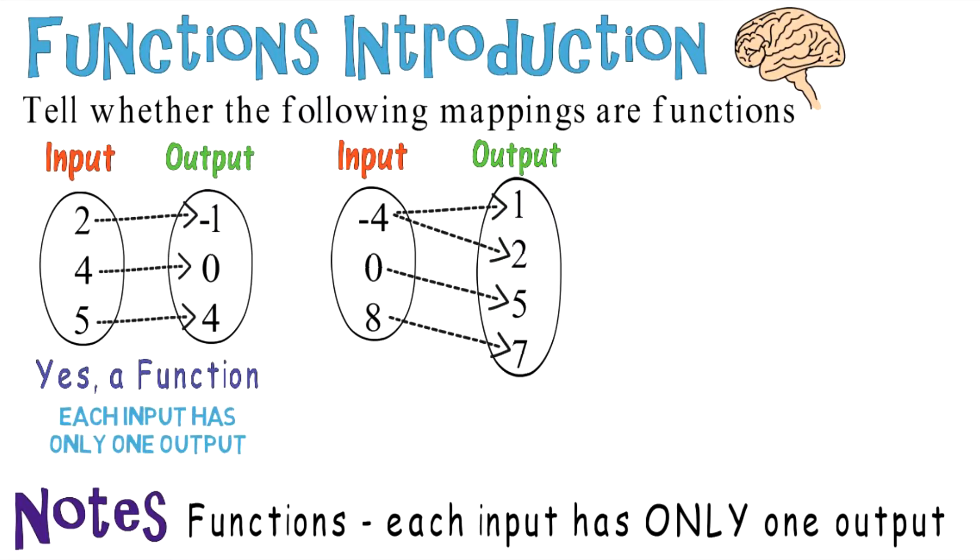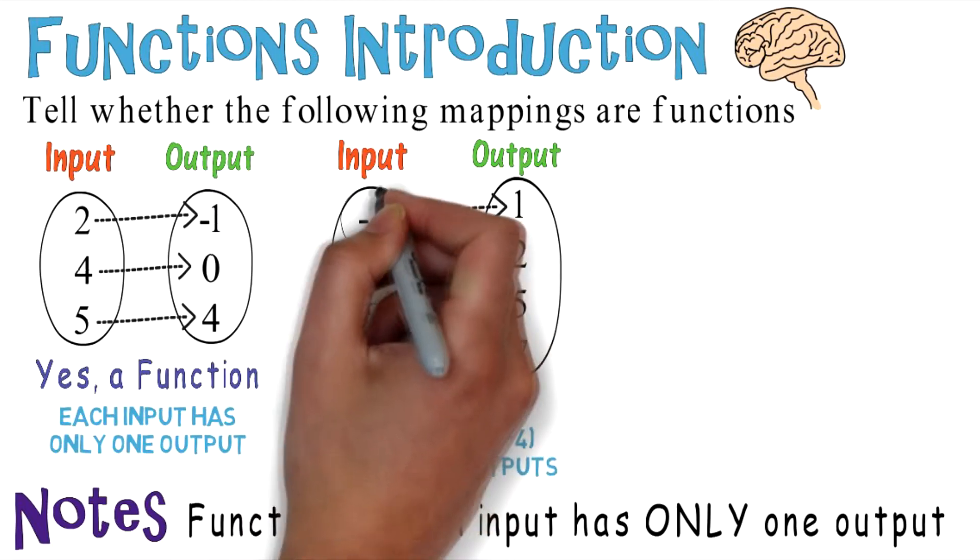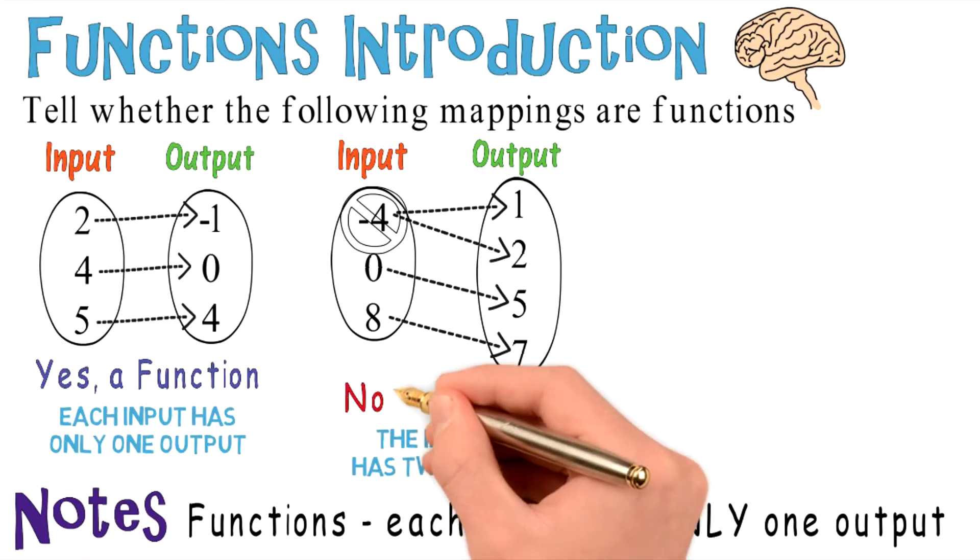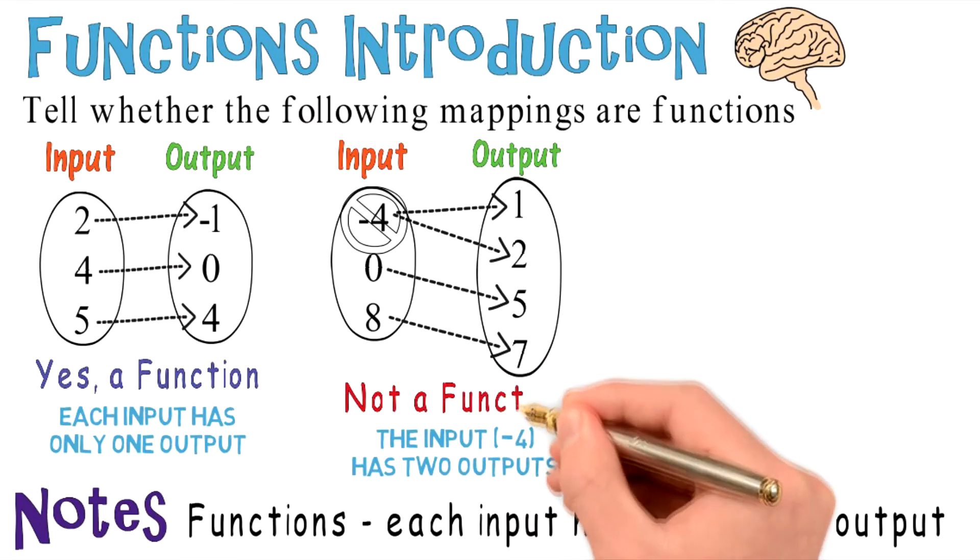Let's take a look. You should notice that the input negative 4 has two outputs. Negative 4 goes to 1 and it goes to 2. Therefore, it doesn't have only one output; it has two outputs. So this is not a function.